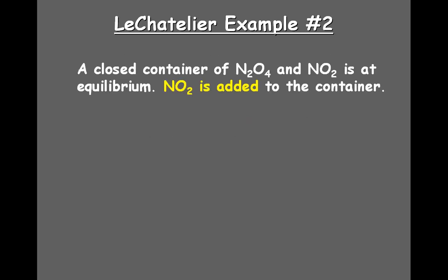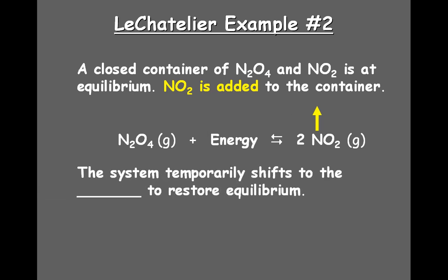Example two: a closed container of dinitrogen tetroxide and NO₂ is at equilibrium. The reaction is N₂O₄ plus some energy producing 2NO₂. Now, suddenly NO₂ is injected into this system. You have a lot of the substance on the right, so you're going to get a temporary shift to the left in order to use up that NO₂. With all this NO₂ available, the rate of the reverse reaction increases, and you get a shift to the left.